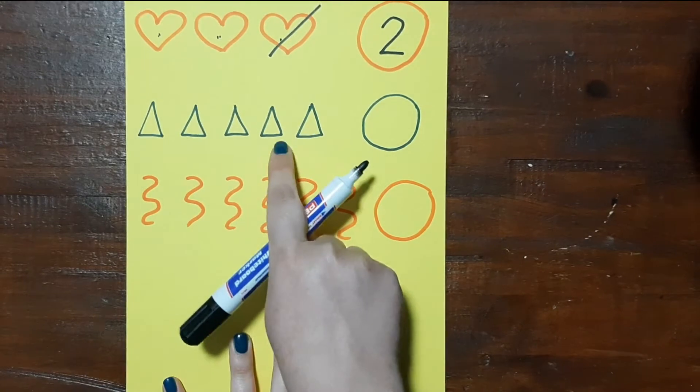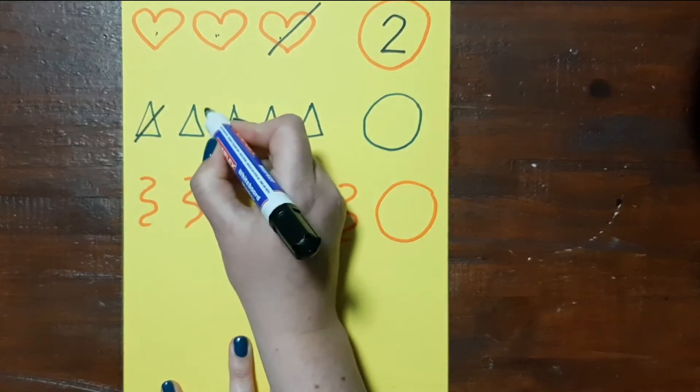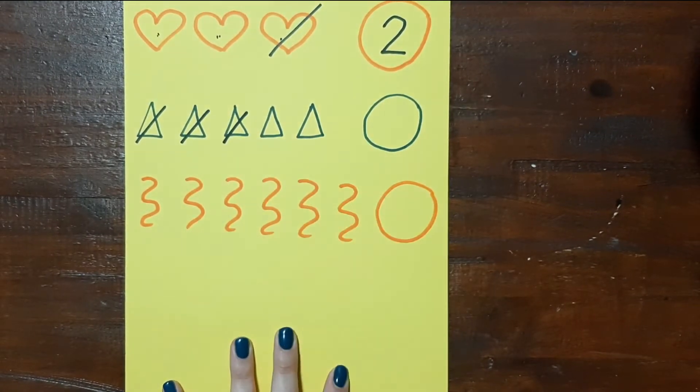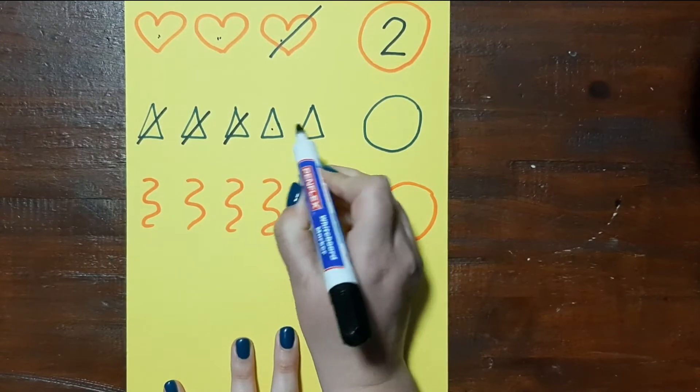Now my teacher says take 3 triangles away: 1, 2, 3. And now I'm going to write how many I have left in the circle: 1, 2.